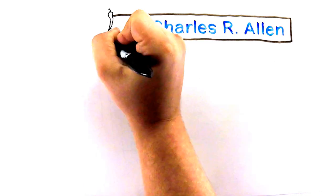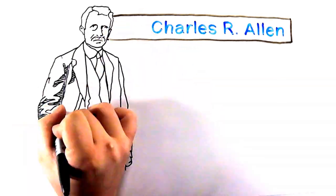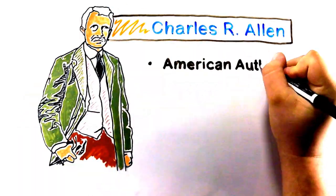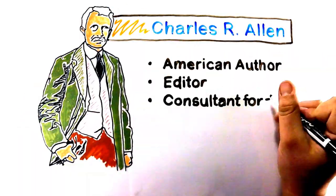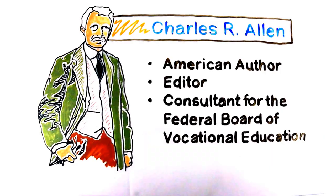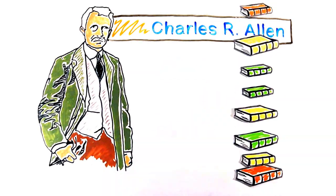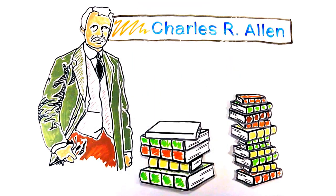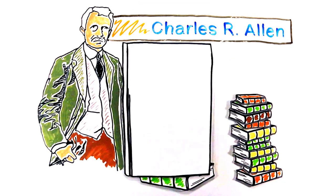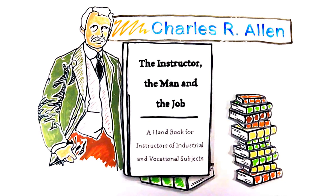Where did it come from? It all starts with a man named Charles Ricketson Allen, an American author, editor, and consultant for the Federal Board of Vocational Education in the early 1900s. Allen would write a series of books on the topics of training and leadership for industrial and vocational applications. His most notable book related to TWI was titled The Instructor, The Man, and The Job: A Handbook for Instructors of Industrial and Vocational Subjects.